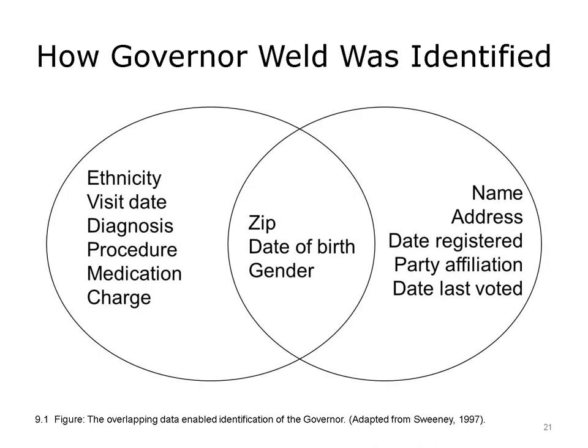This slide demonstrates how Governor Weld was identified. On the left is the so-called de-identified state employee health database, which included state employees' ethnicity, visits to health care providers, diagnoses, procedures, medications, charges, zip codes, dates of birth, and gender. The Cambridge Voter Registration Database included name, address, registered party affiliation, and the same zip codes, dates of birth, and gender. Governor Weld was one of those 87% who had a unique combination of zip code, date of birth, and gender. Sweeney took Weld's voter registration information and then accessed his entire medical information.